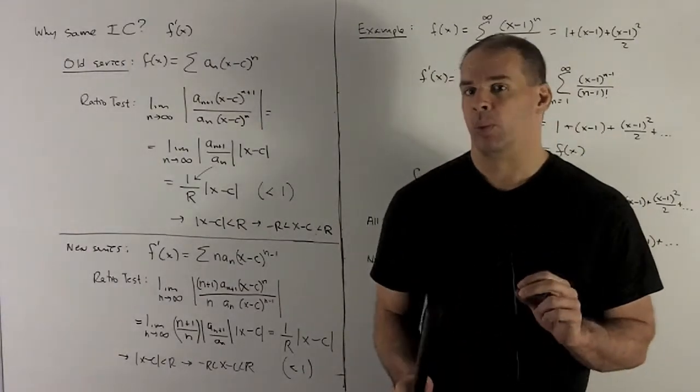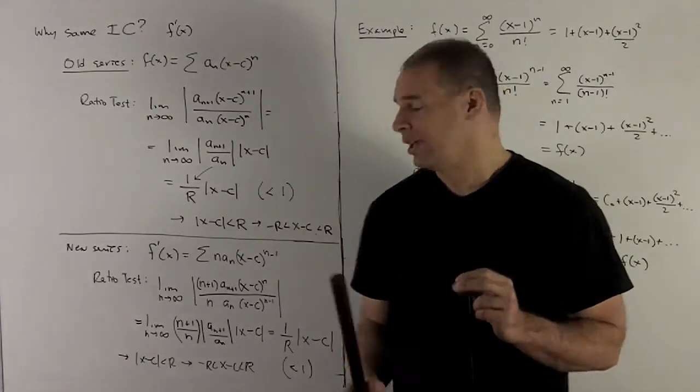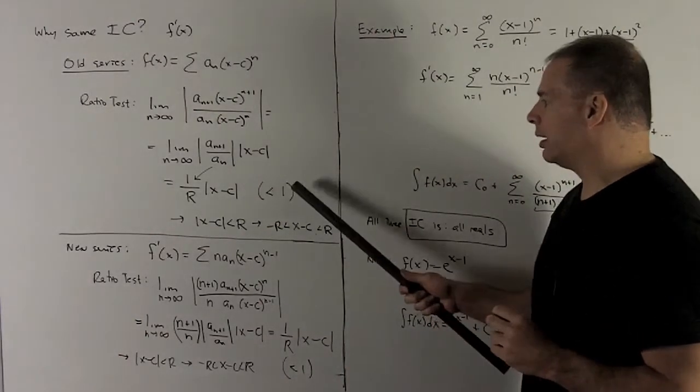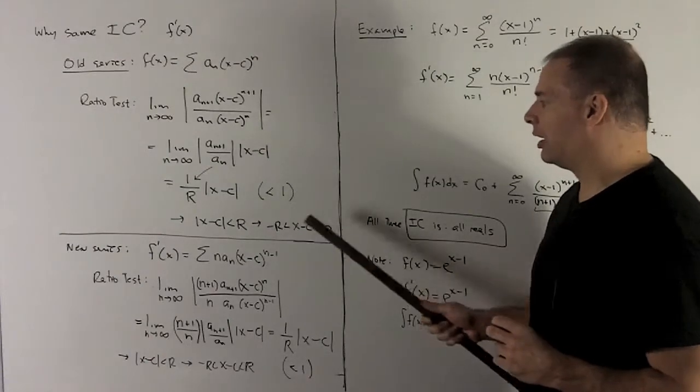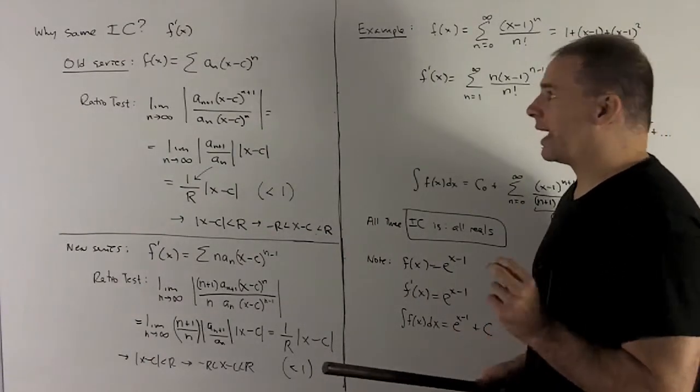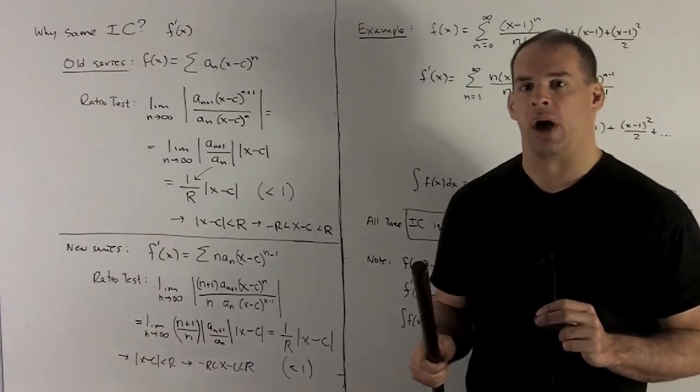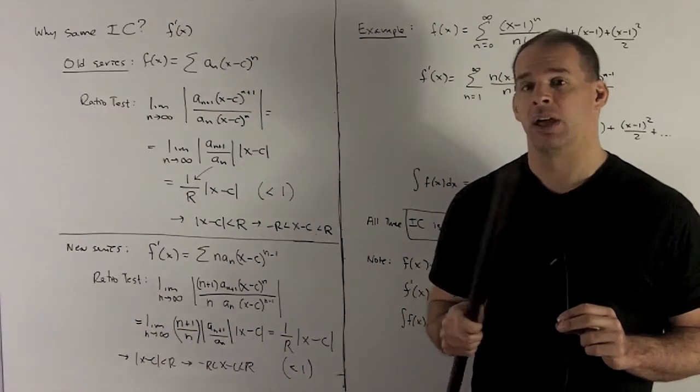Note, we don't know anything about the endpoints because our ratio test is going to be inconclusive when you wind up having exactly 1, and then exactly 1 is going to be the endpoints themselves. For the antiderivative, same argument except you got to deal with the n+1 in the bottom instead of the n in the numerator.